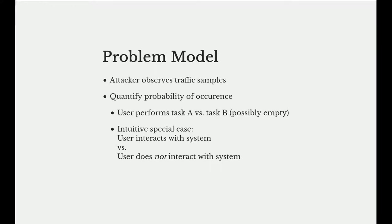We want to quantify the probability of the occurrence of a particular traffic sample. We assume that the user is given the choice between two tasks A and B, which may possibly be empty. The user has to perform one of the tasks. The attacker then captures the output of the system in terms of traffic samples and has to decide whether the user performed task A or task B. An intuitive special case is: task A is the user interacts with the system by pressing a light switch, versus task B where the user does not interact with the system at all during the given time frame.